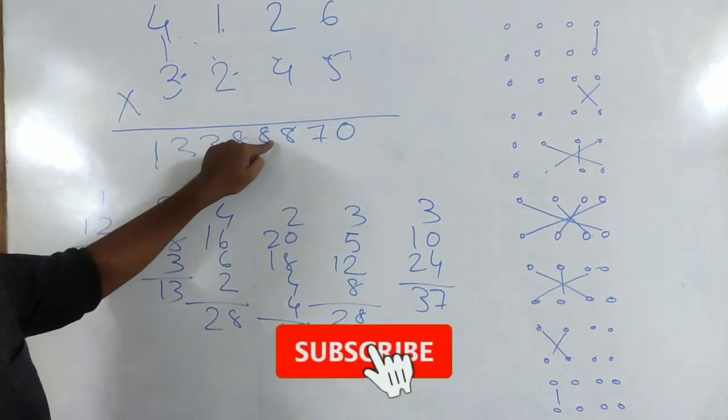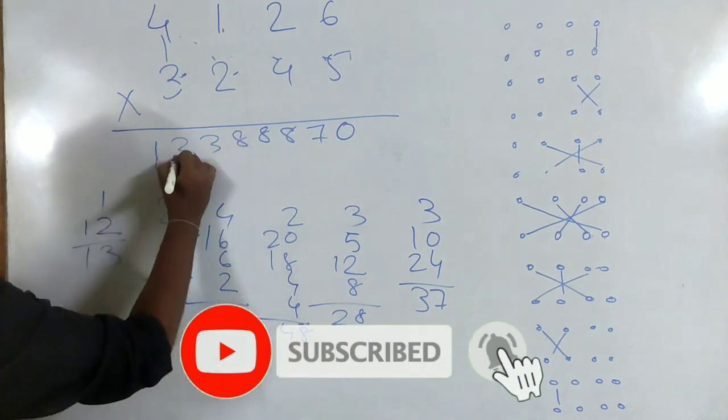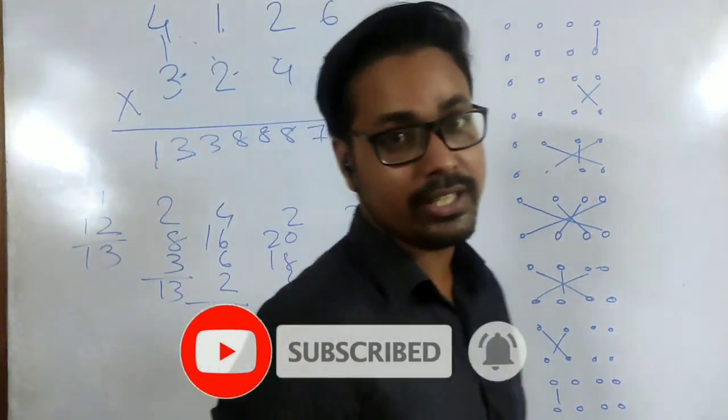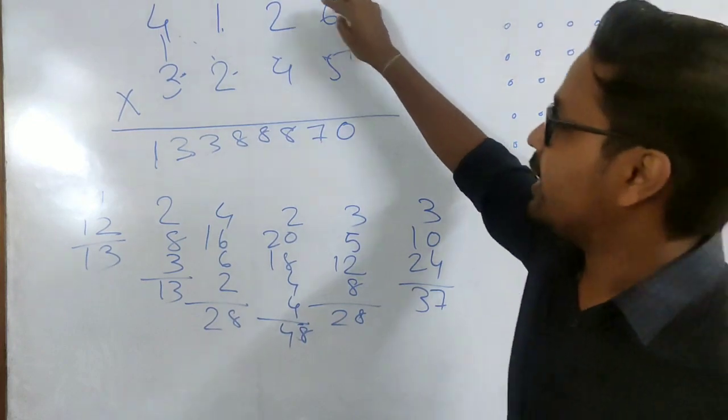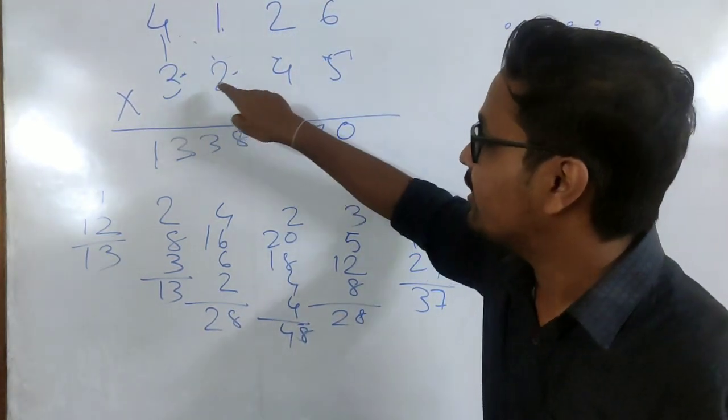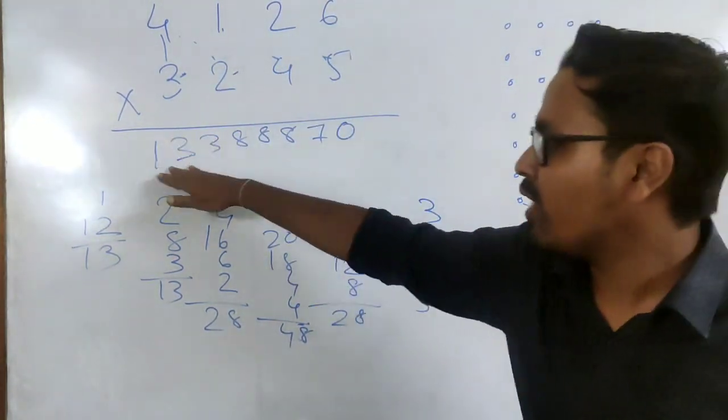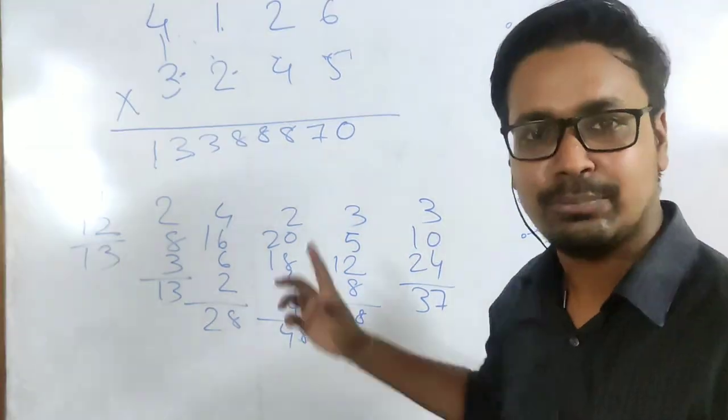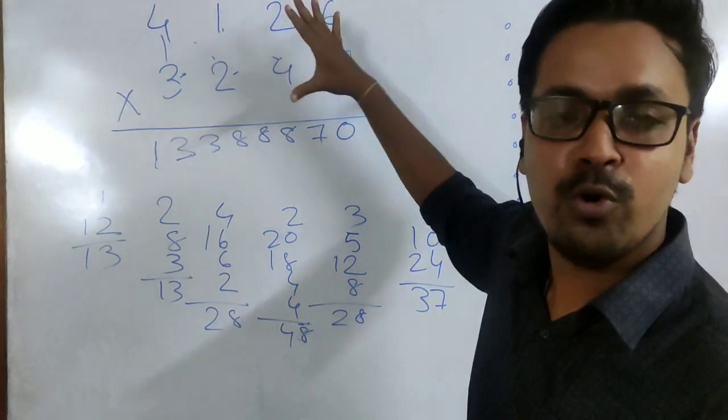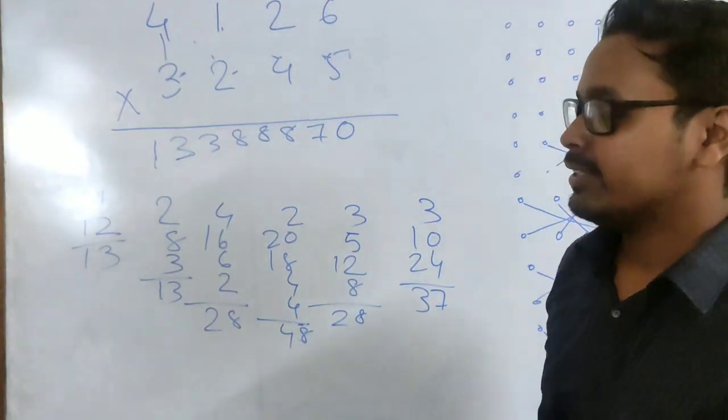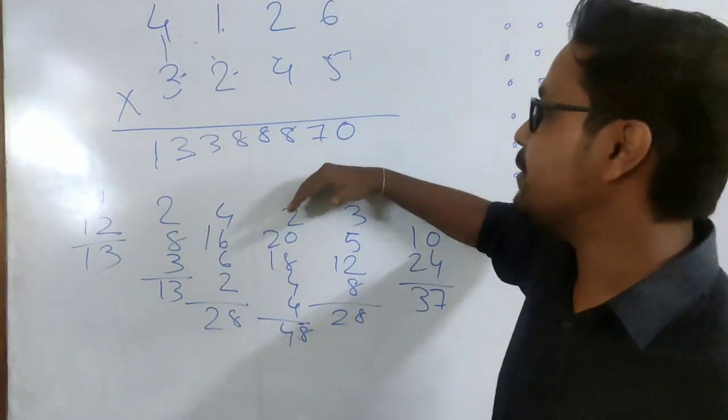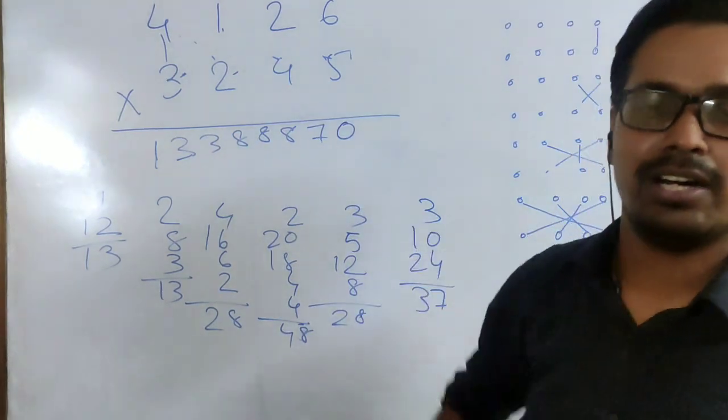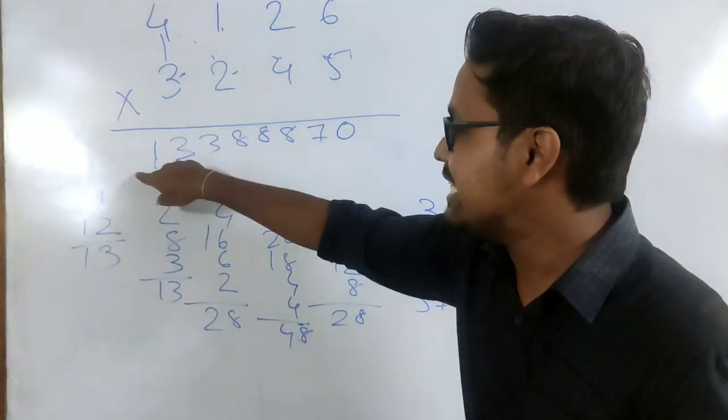What I want you to do is to take out your calculator and check that this is the answer of the multiplication of 4126 and 3245. 13388870. And that's how we have done this multiplication of 4 digit numbers, this humongous multiplication in just one line.